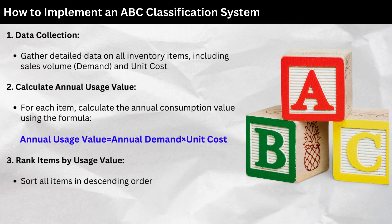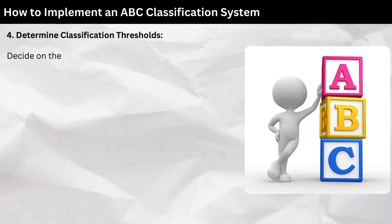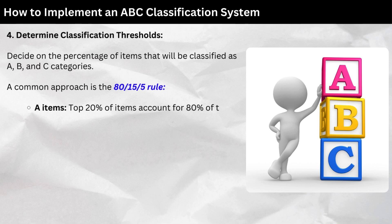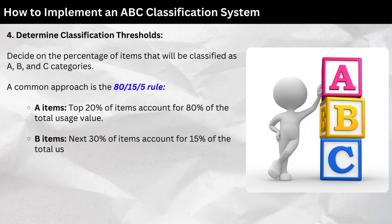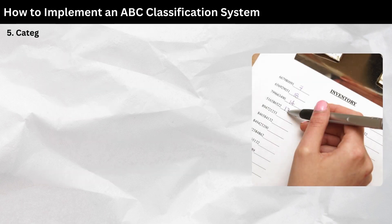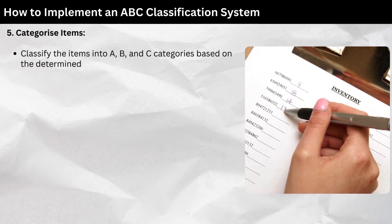Step 3 — Rank items by usage value: Sort all items in descending order based on their annual usage value. Step 4 — Determine classification thresholds: Decide on the percentage of items classified as A, B, and C categories. A common approach is the 80-15-5 rule — A items: top 20% of items account for 80% of total usage value; B items: next 30% account for 15%; C items: remaining 50% account for 5%. Step 5 — Categorize items: Classify items into A, B, and C categories based on the determined thresholds.